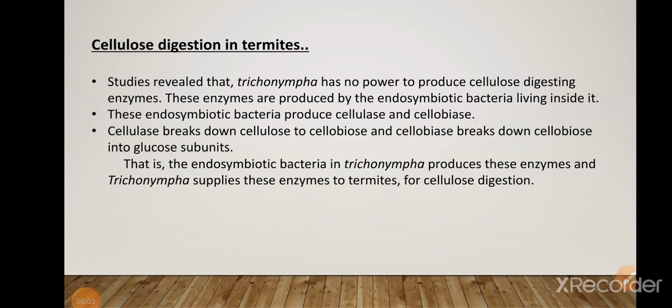In summary, Trichonympha is a symbiotic protist inhabiting the intestine of insects such as termites and wood roaches, showing obligatory symbiosis with wood-eating insects. Termites feed on wood containing cellulose, and cellulose digestion occurs with the help of enzymes provided by Trichonympha. These cellulase-digesting enzymes are produced by endosymbiotic bacteria inside Trichonympha, which break down cellulose into glucose subunits.